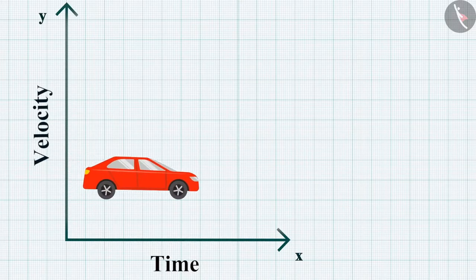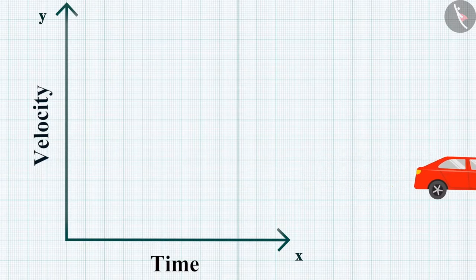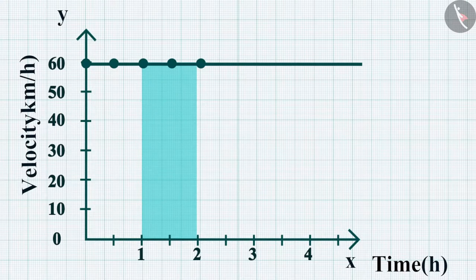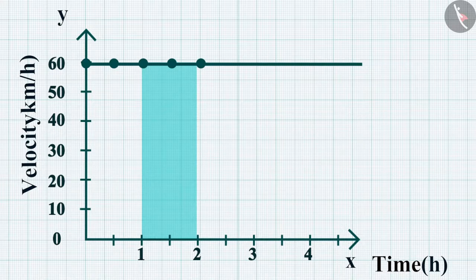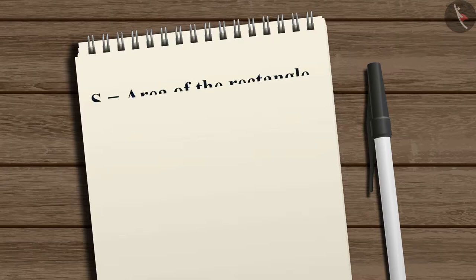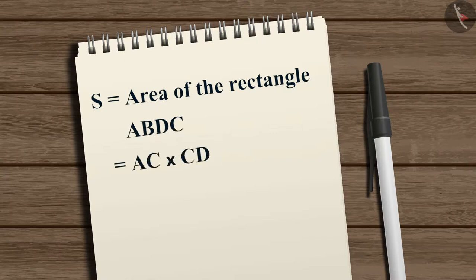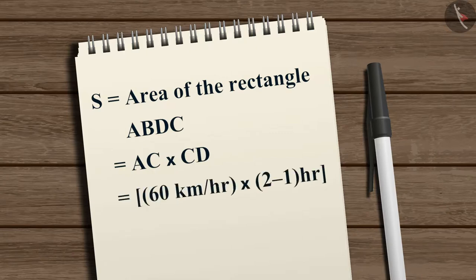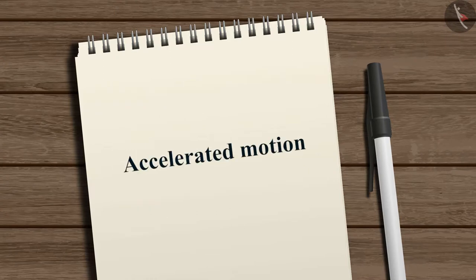As the car is moving in a single direction, the magnitude of displacement equals the distance covered. To calculate the distance covered between time 1 hour and 2 hours, draw perpendiculars from those time points on the graph. The distance s = area of rectangle ABDC = AC × CD = 60 km/h × (2 − 1) hour = 60 kilometers.